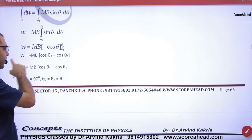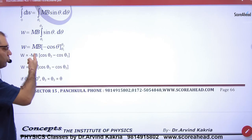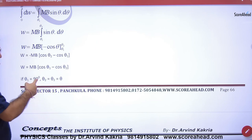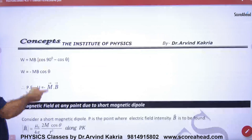What will it be? Work done formula. It was PE. It was MB. And it was also a special case. If one angle is 90°, one angle is theta. What is the potential energy formula?